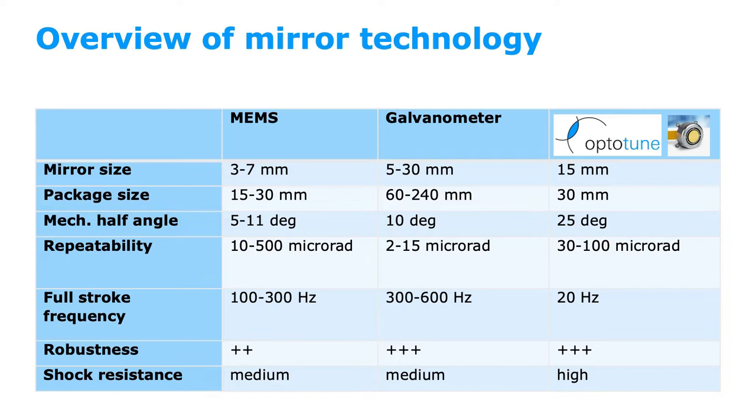Often several of these parameters are linked together in a mutually exclusive way. For example, as the mirror size grows, typically the full-stroke oscillation frequency goes down. Any of the three mirror technologies has its advantages and disadvantages. Your application needs define what is the most suitable one.